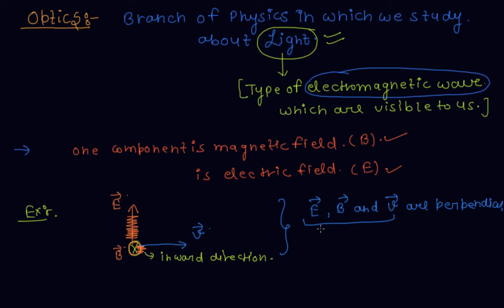So basically, this is an electromagnetic wave. Light is a type of electromagnetic wave which are visible to us. In the next section, I will discuss how many types of electromagnetic waves there are, and what is the range of light waves — or in other words, what is the range of electromagnetic waves which are visible to us.